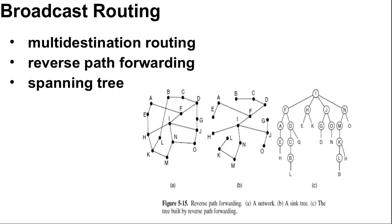The next topic is broadcast routing. In some applications, hosts need to send messages to many or all other hosts. For example, services distributing weather reports, stock market updates, or live video programs might work best by sending to all machines and letting those that are interested read the data. Sending a packet to all destinations simultaneously is called broadcasting. One broadcasting method is for the source to simply send a distinct packet to each destination. Not only does this method waste bandwidth, but it also requires the source to have a complete list of all destinations. This method is not desirable in practice even though it is widely applicable.